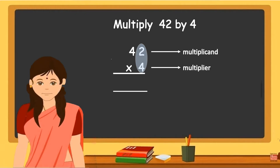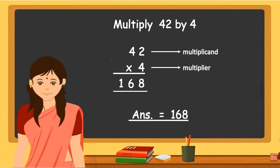4 into 2 is equal to 8. Then multiply 4 into the tens digit in the multiplicand — that is 4 into 4, which is equal to 16. 16 is a two-digit number, so you will write 6 in the tens place and 1 in the hundreds place. The answer or the product is 168.